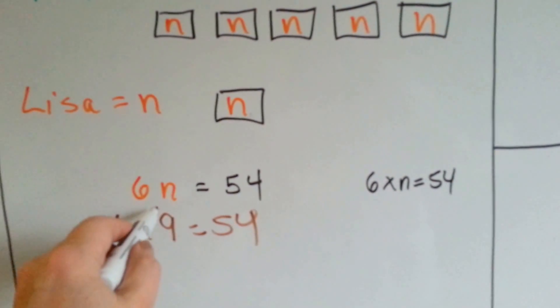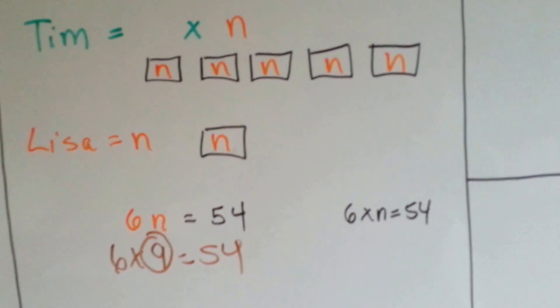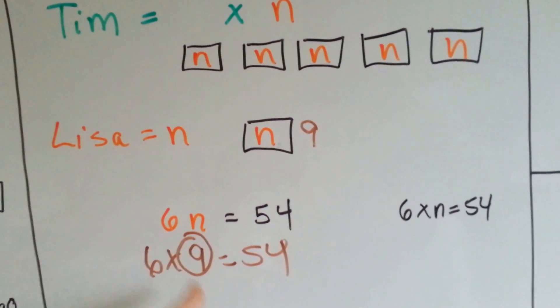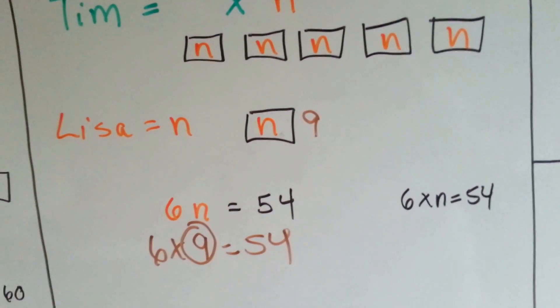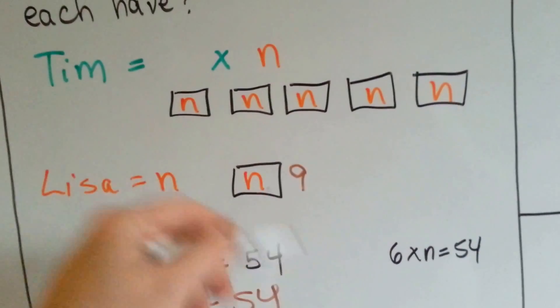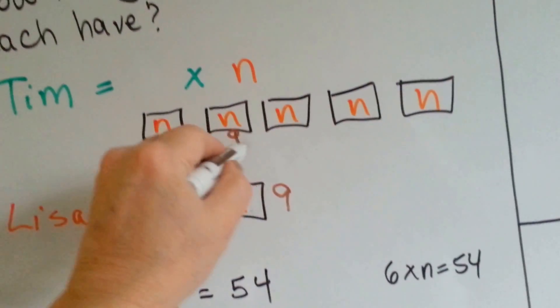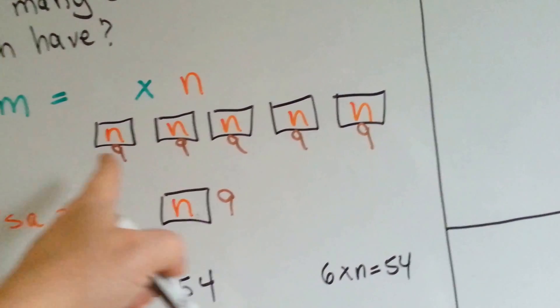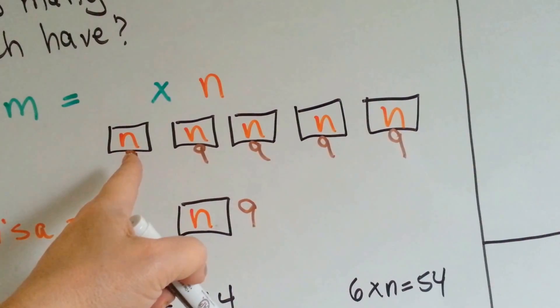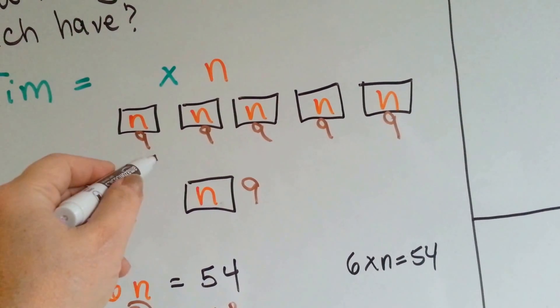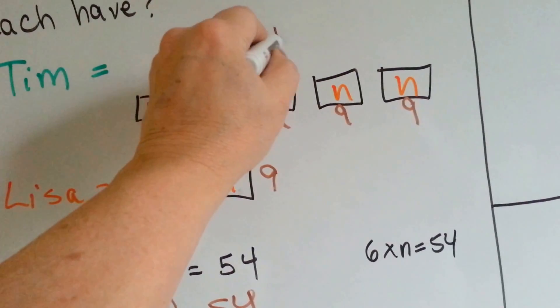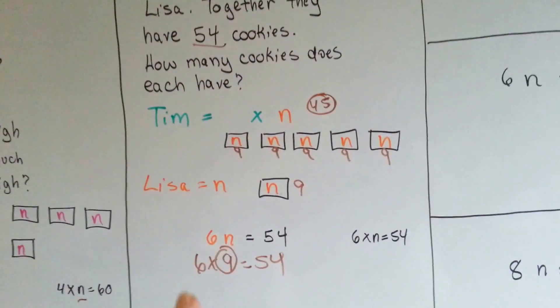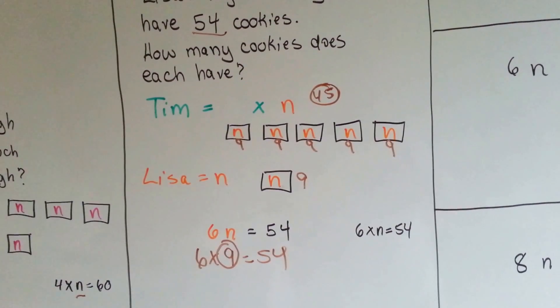So, if nine is our answer, that means that's what an n is. n is equal to that nine. See? Here's the six, here's the n, and here's the fifty-four. So, nine is equal to the n. That means Tim has got five of these. See? What's five times nine? Five times nine is forty-five. So, Tim has forty-five cookies, and Lisa has nine cookies. See how we got that?